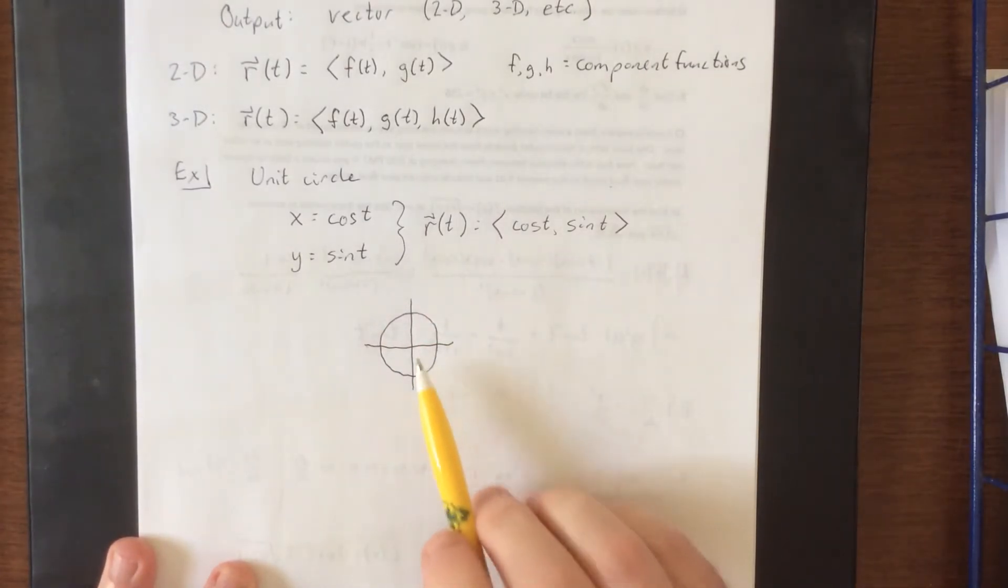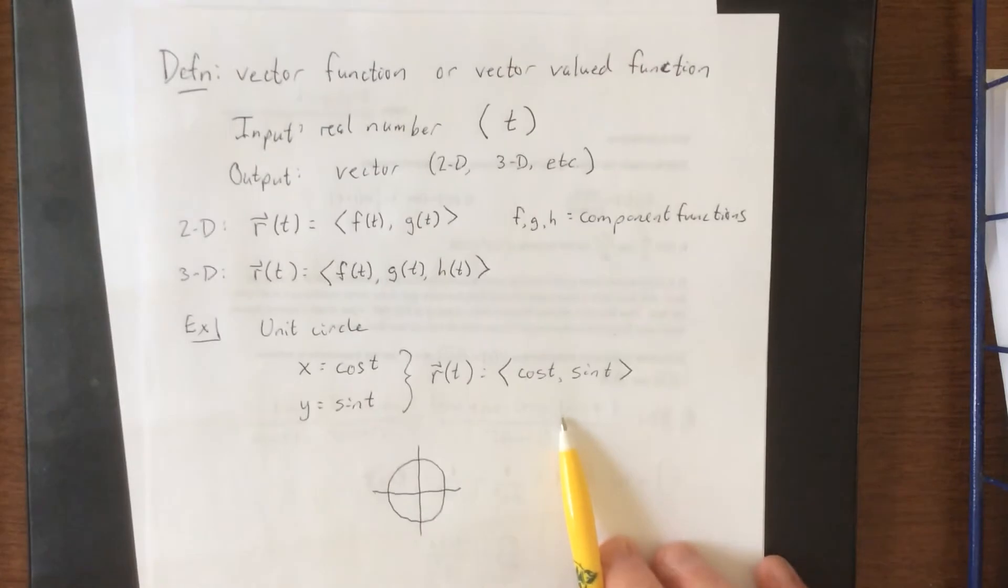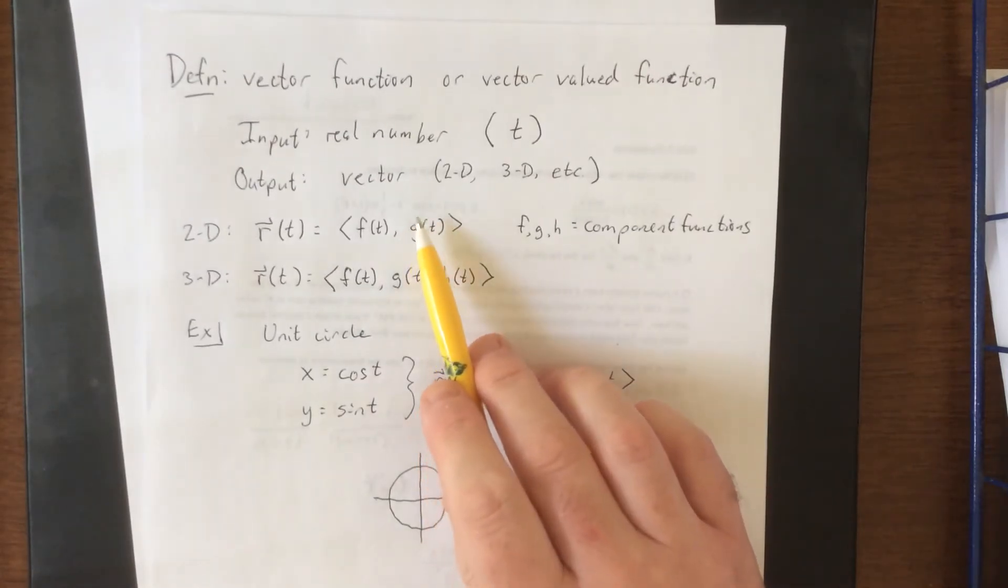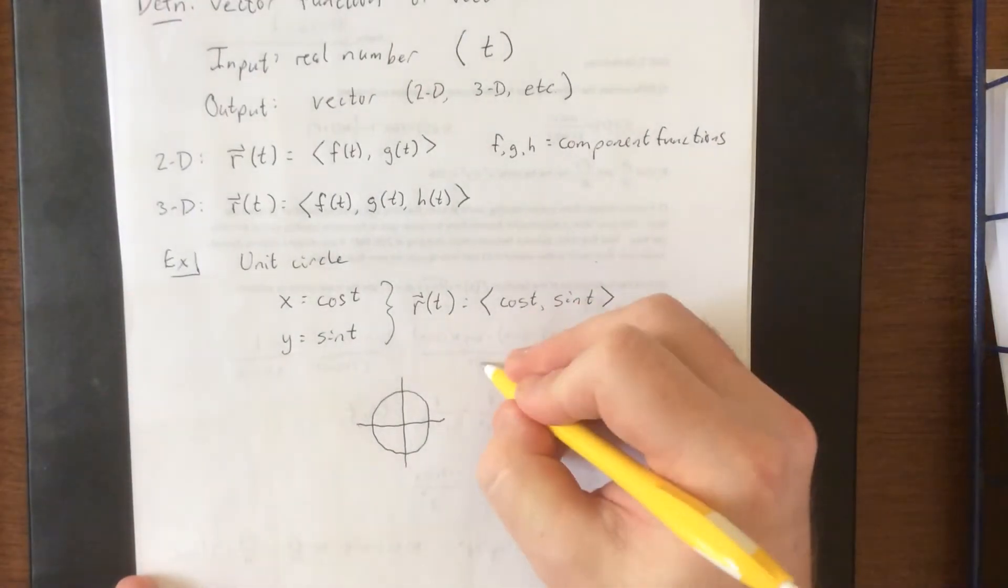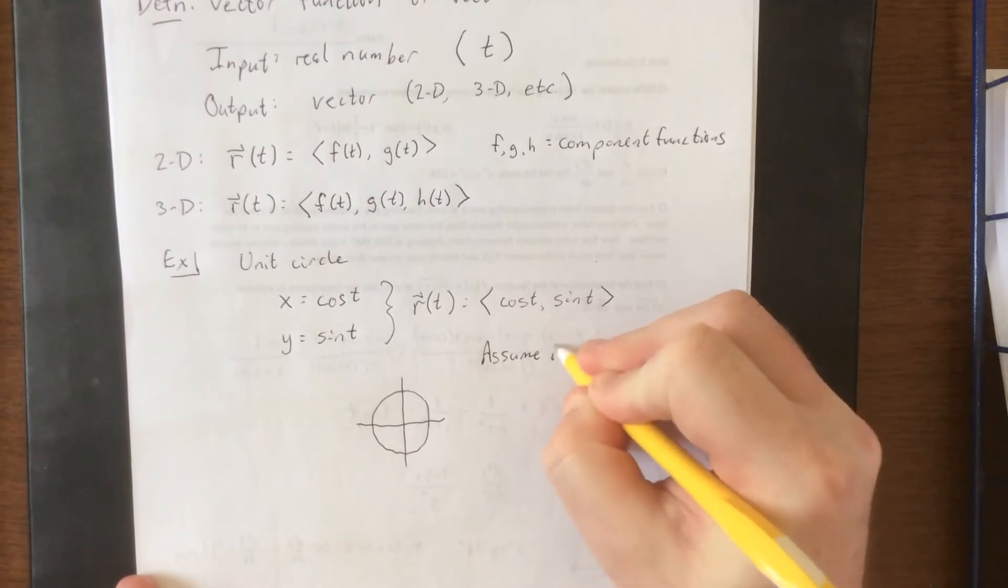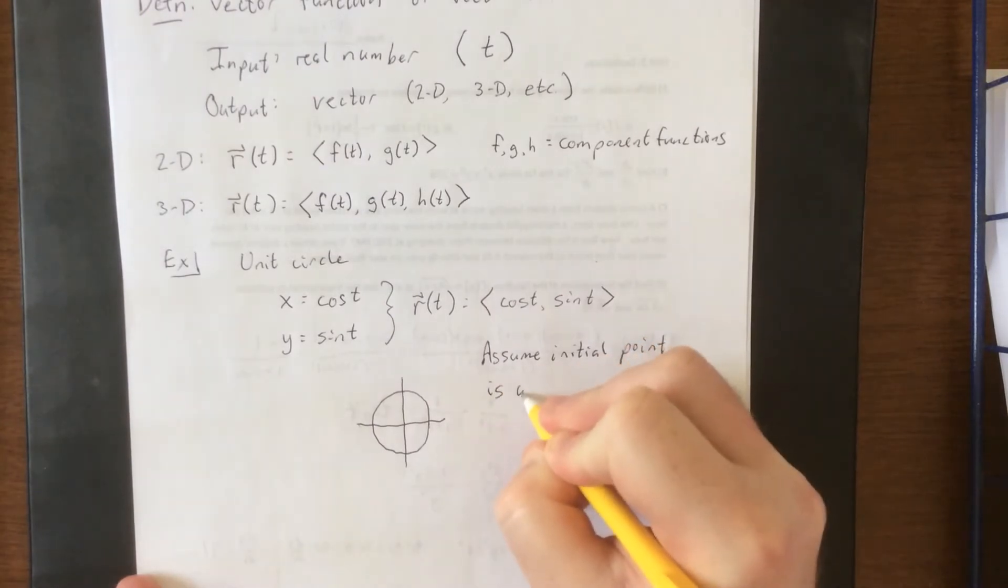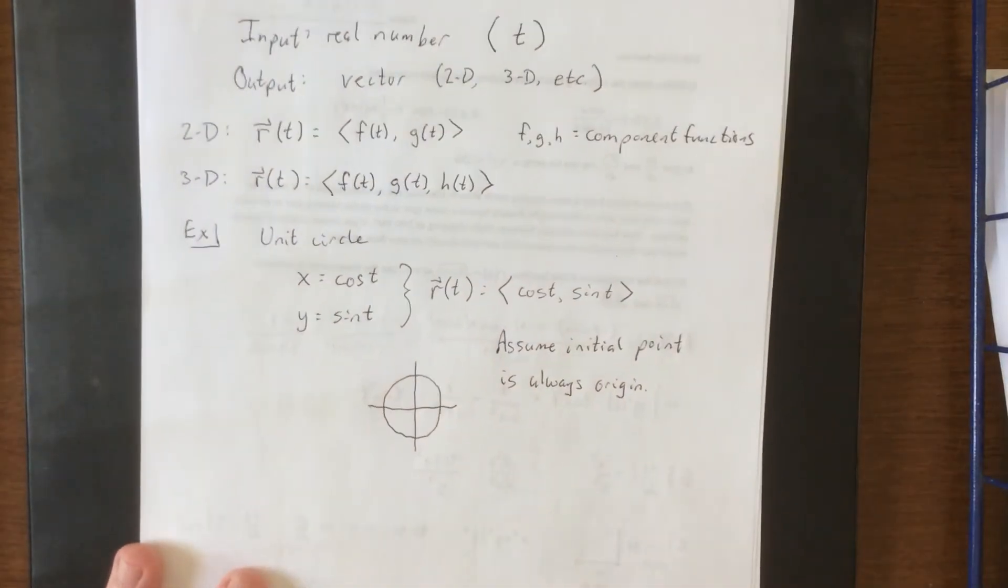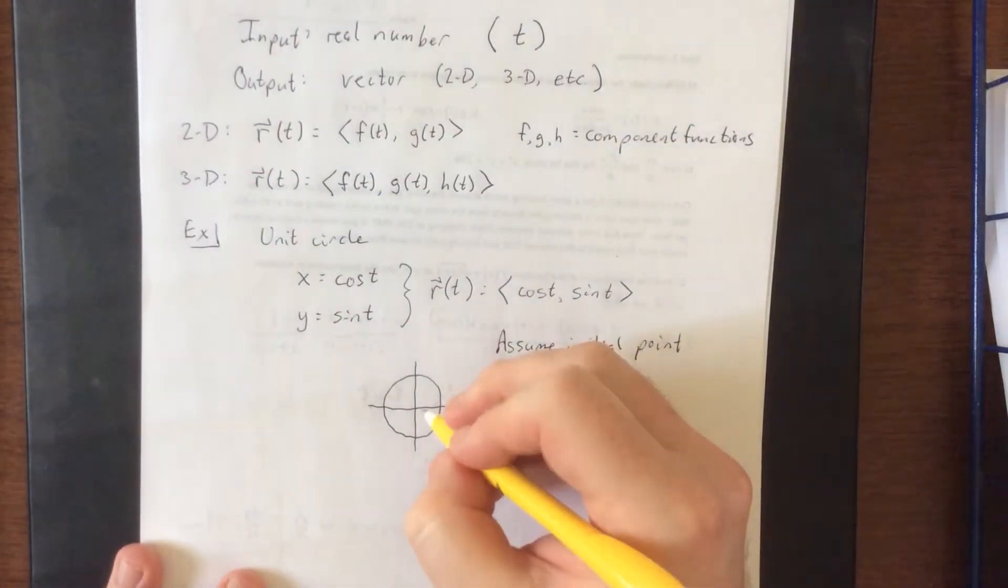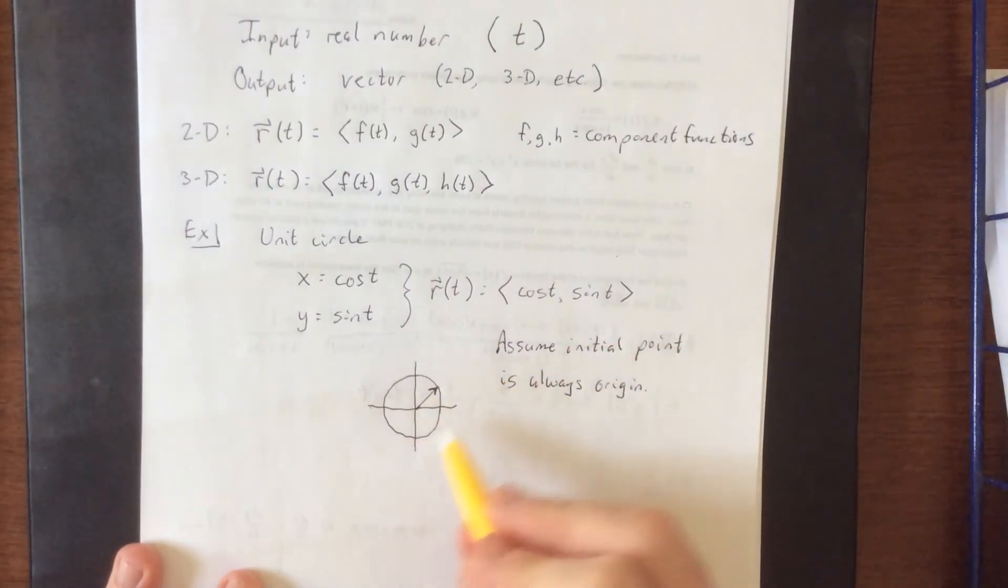Now the question becomes, how does this graph relate to this vector-valued function? Well with a vector-valued function, we're starting with an input of a real number and an output of a vector. A vector typically has to have an initial point and a terminal point. Now if you assume the initial point is always the origin, then for any value of t that we plug in here, we're going to get a vector whose initial point is at the origin, whose terminal point is some point on this curve.